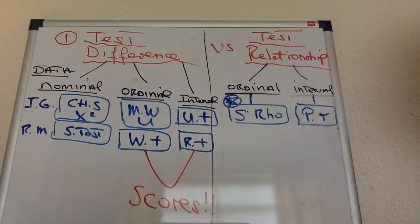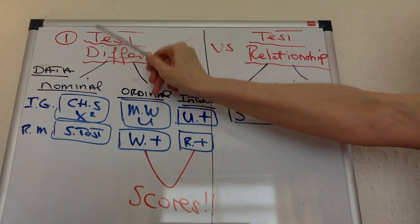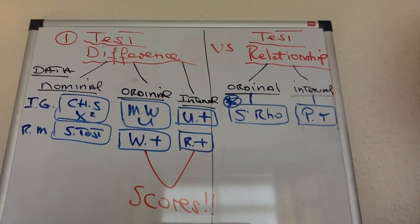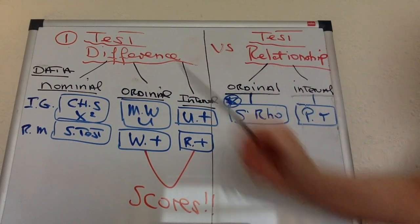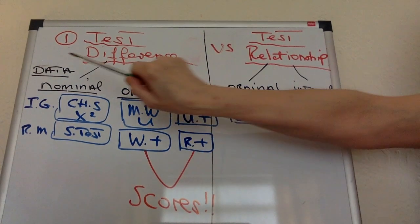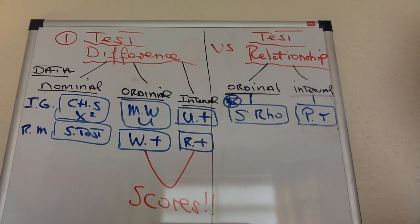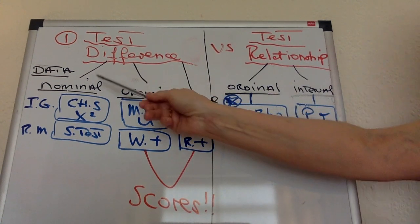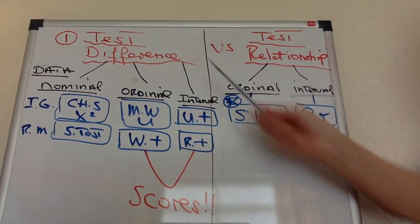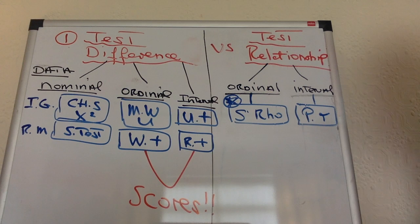Okay, that's the relationship stuff done. All the rest of the tests will be tests of difference. So once you know you've not got relationship data, you've got people into groups and a difference between groups, what do you do? You look at the data involved. Is it nominal data? Is it ordinal data? Or is it interval data? Now, the differences really matter on this side.